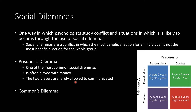If both prisoners stay silent, both get some time but not too much. If both confess, both spend an extended time in jail. In the payoff matrix: if both remain silent, both get two years; if one confesses while the other stays silent, the confessor gets one year while the silent party gets eight years. If both confess, both get five years.